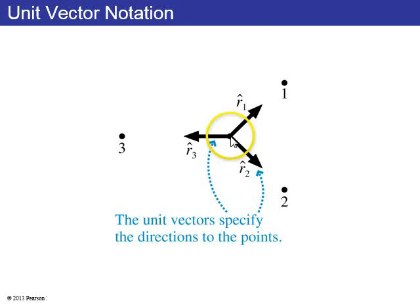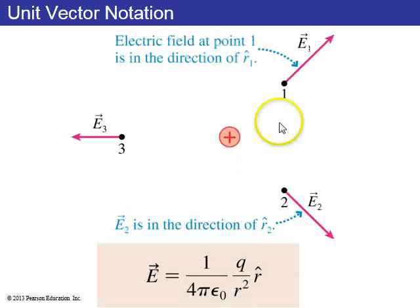So recall unit vectors. If you're looking at a source charge right here, and you're looking at r1 as being the unit vector in the direction of point 1 in space, r2 is the unit vector in the direction of 2, r3 hat is the unit vector in the direction of 3, then the electric field at points 1, 2, and 3 are 1 over 4 pi epsilon 0 times q over r squared times r hat, where r hat is the unit vector in the direction of r.